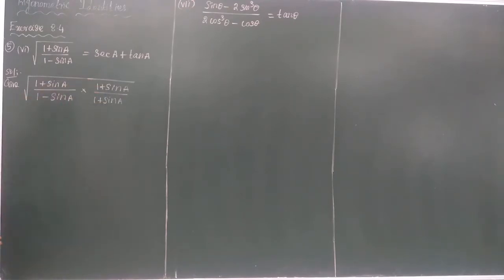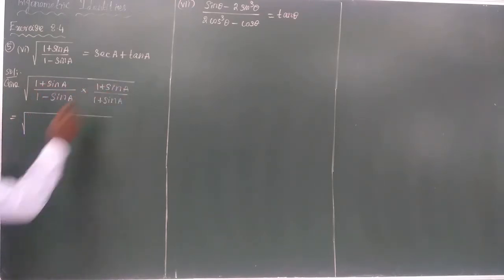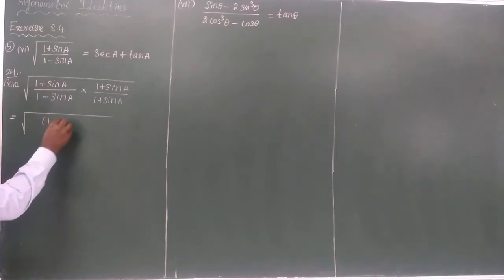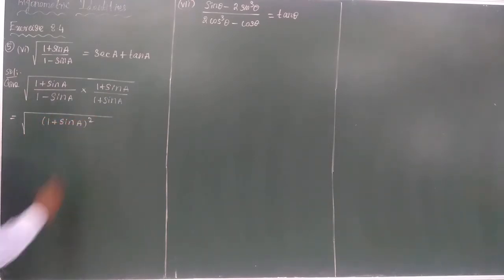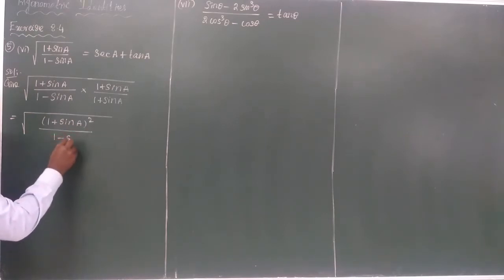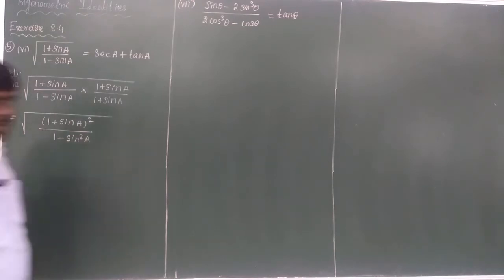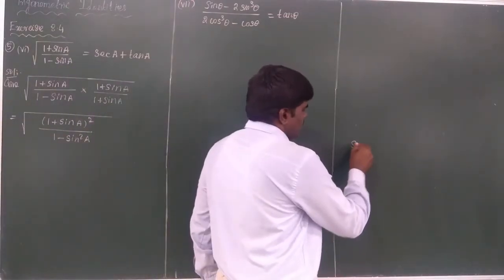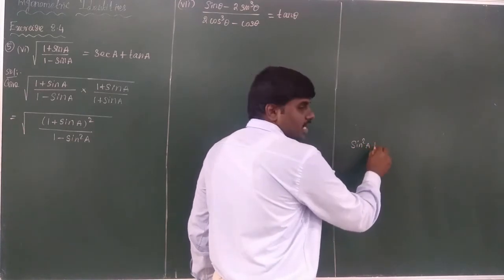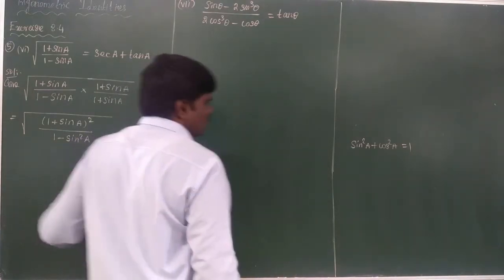Now divide the numerator values under the square root. We get (1 + sinA) squared in the numerator. In the denominator, we have 1 - sin²A. You know the formula: sin²A + cos²A = 1, therefore 1 - sin²A = cos²A.